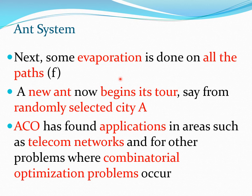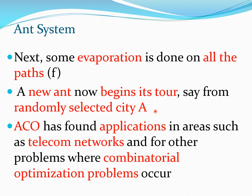Once the first ant has completed its closed path, some vanishing of pheromone takes place from all paths. The new ant begins its tour from randomly selected city A. This ant has the advantage that the previous ant laid down pheromone on a certain path, so it can factor that in. However, this pheromone is also slowly dissipating. Both these aspects are combined with the heuristic value that favors paths of shorter length.